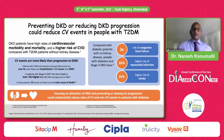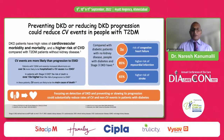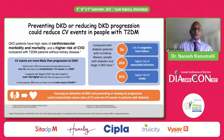Diabetic kidney disease patients have a higher risk of cardiovascular morbidity and mortality compared to people with diabetes and no kidney disease — specifically a 3 times higher risk of congestive heart failure, 85% higher risk of myocardial infarction, and 65% higher risk of stroke. Detecting diabetic kidney disease and preventing or slowing its progression could substantially reduce rates of cardiovascular and non-cardiovascular events, which is where primary care has an important role to play.